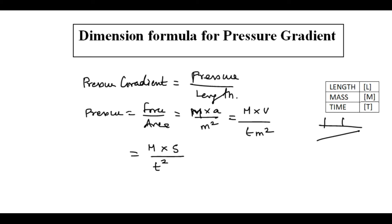Displacement by time square into meter square - this is going to be displacement or I can write it as meter, and here also it is meter square. If I cancel both, I get m t power minus 2 and m power minus 1.